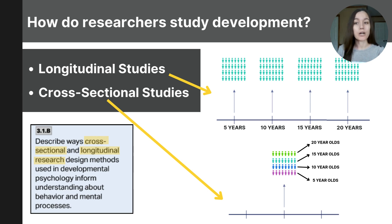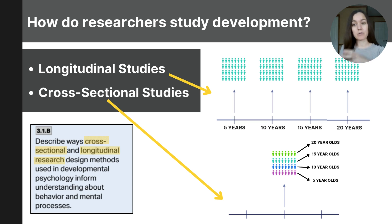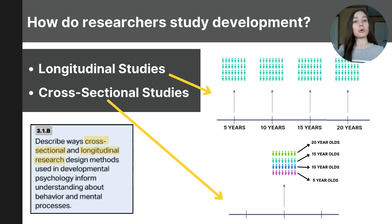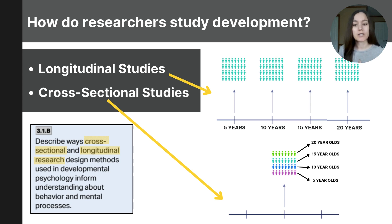Just a quick recap: cross-sectional studies compare different groups of people at the same time from different age cross sections, while longitudinal studies follow the same group of people over the course of time. By combining insights from both of these methods, developmental psychologists can understand how people change and grow throughout their lifetime.